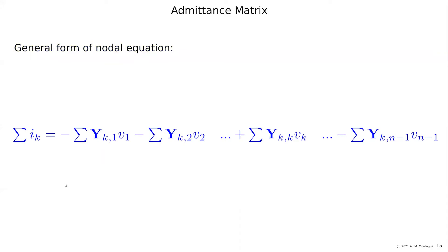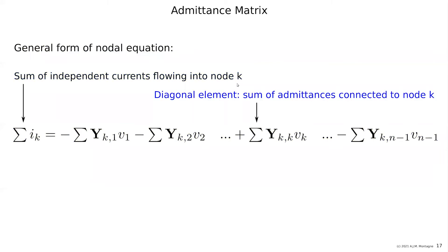So this is the general form of a line in the matrix, of a row in the matrix, which is one equation, one nodal equation. So node k. And now what do those terms mean? Here you see the sum of the independent currents flowing into the node k. Here we have Y_kk, which is a diagonal element. It is the position kk in the Y matrix times the voltage, the nodal voltage k, of course. And this is the sum. You see the sum of all admittances connected to that node.